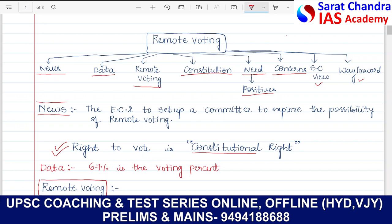Coming to the data related to remote voting, 67% voting percentage was noted in the 2019 Lok Sabha elections. This means 300 million voters out of 900 million voters did not cast their vote. So 67% of the people have voted, meaning most people are not using their right to vote.